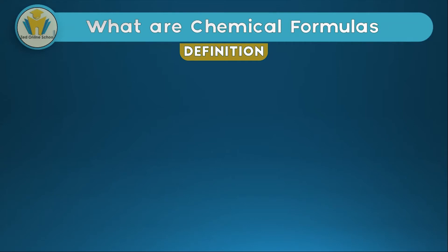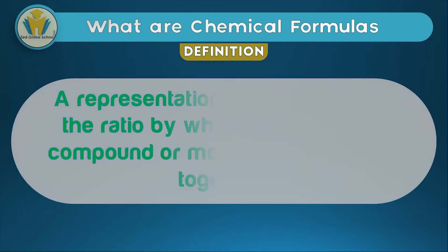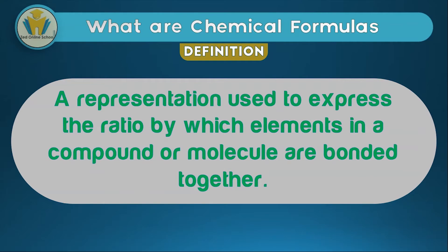We can start writing about chemical formulas without really defining them. The easiest definition is that a chemical formula is just a way of writing a compound using symbols instead of writing everything in full words. We use symbols that are indicated on the periodic table. The full definition is that a chemical formula is a representation used to express the ratio by which elements in a compound or molecule are bonded together.